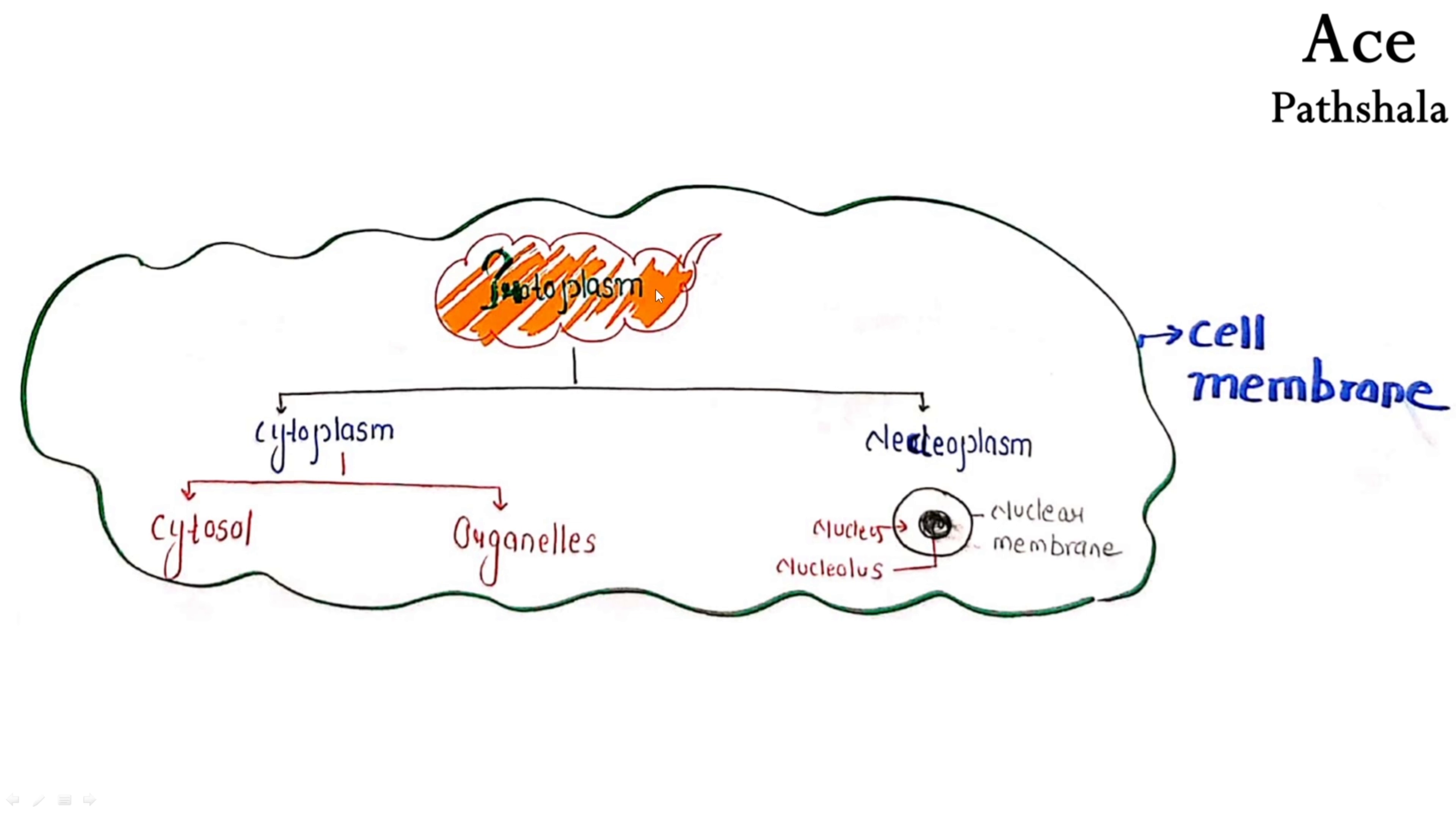The cell membrane contains mainly protoplasm. Now we have said that cytoplasm is present. What is protoplasm? Basically, protoplasm is cytoplasm plus nucleoplasm. We include both in protoplasm. Because we have said that the things present outside the nucleus will be called cytoplasm. So what will be protoplasm?